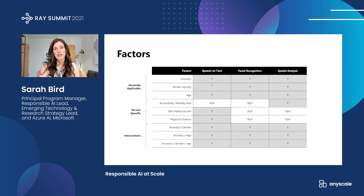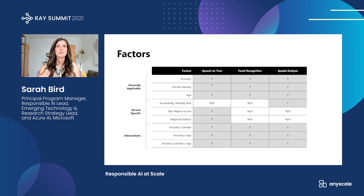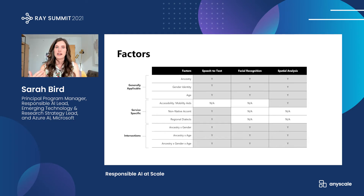Diving deeper, we can look at three of our systems: speech-to-text, facial recognition, and spatial analysis. What we're learning is there are some factors common across many services — for example, ancestry, gender identity, and age. However, there are other factors specific to a particular service. For example, spatial analysis, which tracks people's movement through spaces — mobility aids is a key factor we want to look at, to ensure someone using a mobility aid is still properly tracked. For speech-to-text, we may want to look at regional dialects, sociolects, or accents as another dimension.